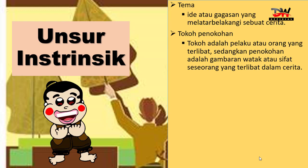Protagonis adalah tokoh utama yang biasanya berwatak baik. Sedangkan antagonis adalah tokoh yang jahat atau buruk, tokoh lawan dari protagonis. Yang ketiga ada tritagonis, yaitu tokoh penengah. Dan yang keempat adalah figuran, yaitu tokoh pelengkap saja.